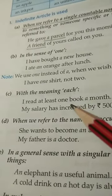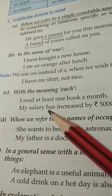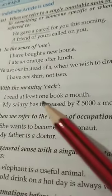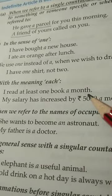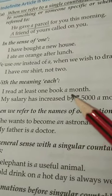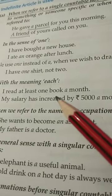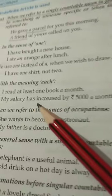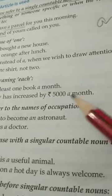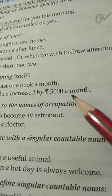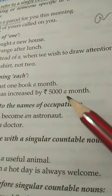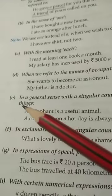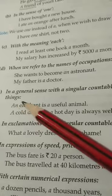Third condition: indefinite article is used with the meaning of 'each'. Whenever we want to mean 'each' in a sentence, we use an indefinite article. Example: 'I read at least one book a month' — 'a month' means each month. Second example: 'My salary has increased by five thousand rupees a month' — again 'a month' means each month.